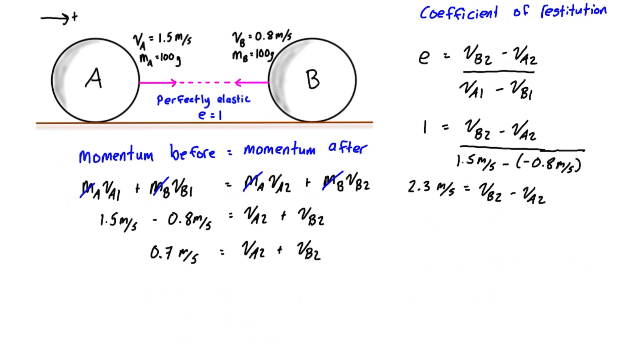Let's just rearrange this a little bit for VB2. It'll make us easier to substitute in the next step. So let's write VB2 is equal to 2.3 meters per second plus VA2.